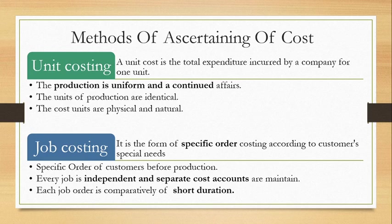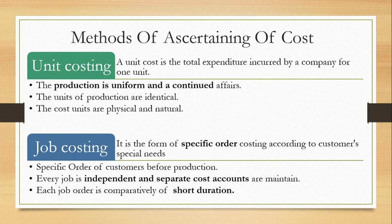These are all single, identical units. If you take any micromax mobile of a particular range, all mobiles in that range are the same. Also, this process continues non-stop — it is not order-based. These industries continuously carry out production whether or not they have received orders. So in unit costing, the production is uniform and continuous.